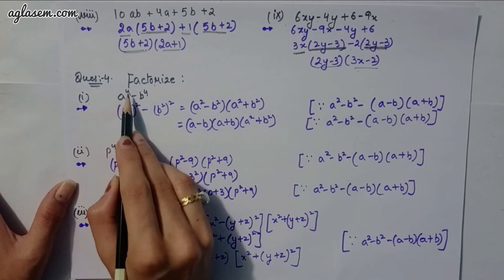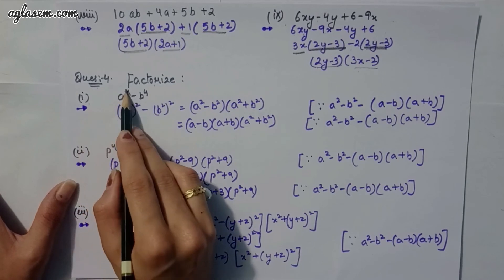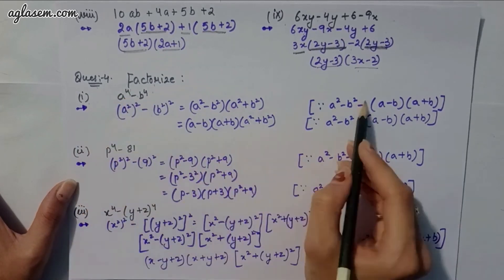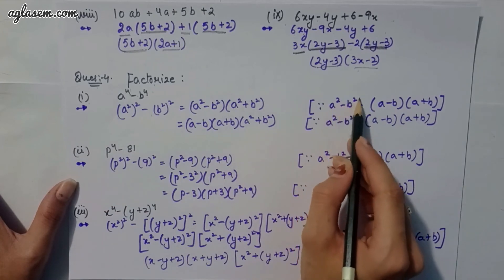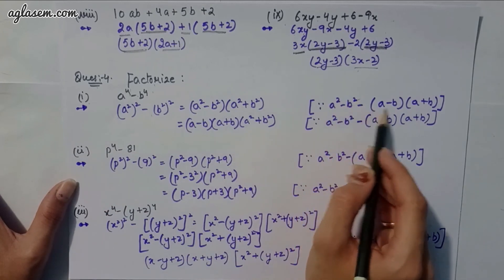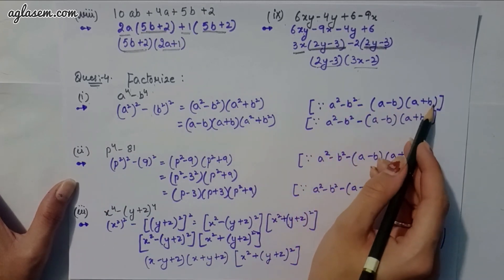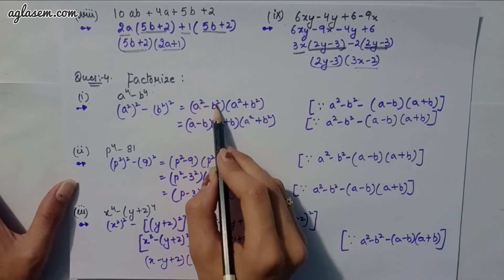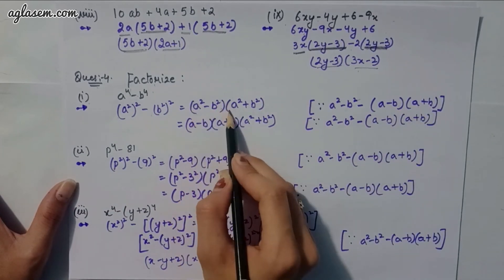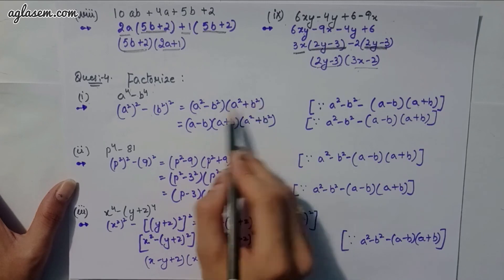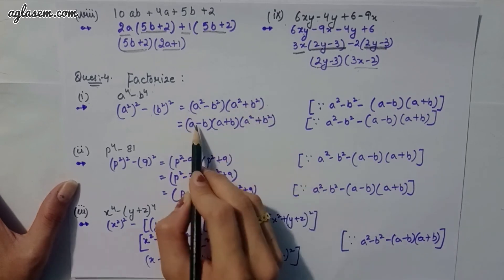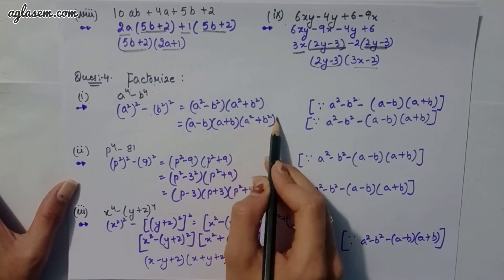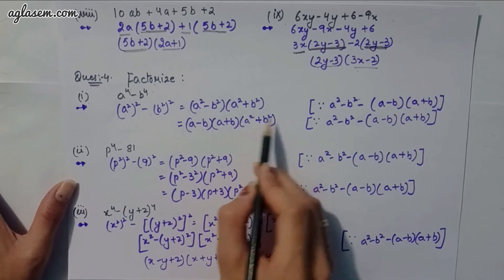Moving to the fourth question — factorize. Part 1: a⁴ − b⁴. Apply a² − b² = (a − b)(a + b): (a² − b²)(a² + b²) = (a − b)(a + b)(a² + b²).